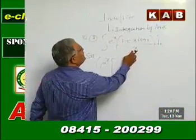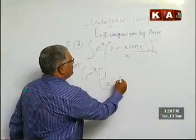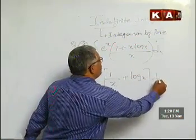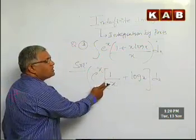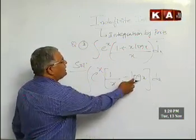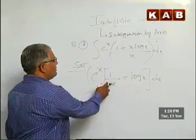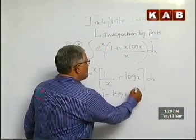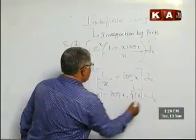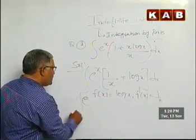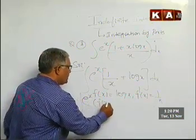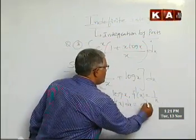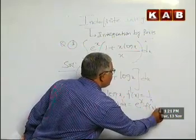Here there are two expressions divided by x. For each, write the same denominator: 1/x + log x. Now, the derivative of 1/x is −1/x², and the derivative of log x is 1/x. So f(x) will become log x, and f'(x) will become 1/x. Using the formula: integral of eˣ·[f(x) + f'(x)] dx = eˣ·f(x) + c.